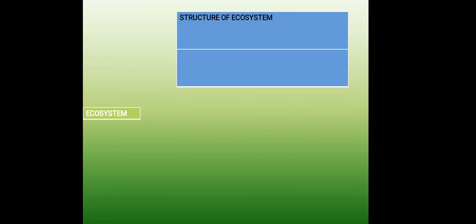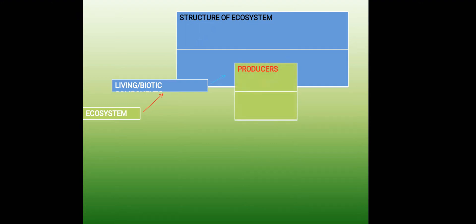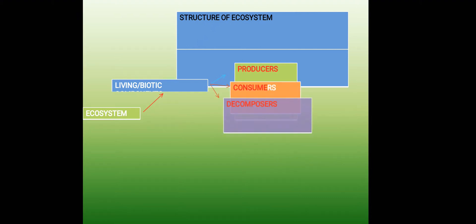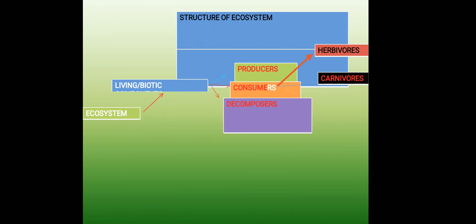An ecosystem consists of living, or biotic, components which include producers, consumers, and decomposers. The consumers are divided into three types: herbivores, carnivores, and omnivores.